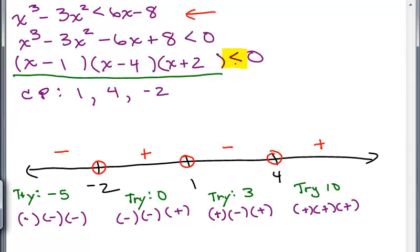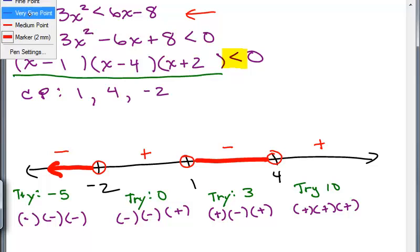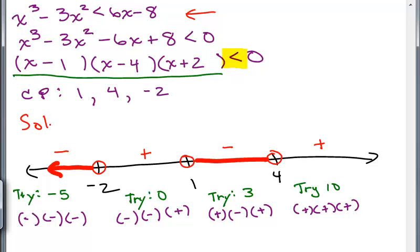So we want where it's less than 0. So we want over here, that's where it's negative, and in between here. If we're going to write this in interval notation, it goes from negative infinity up to negative 2, and it doesn't include negative 2. So we have this union with the next part, which is between 1 and 4. Remember, that's not an ordered pair, that's an interval, all the numbers between 1 and 4.